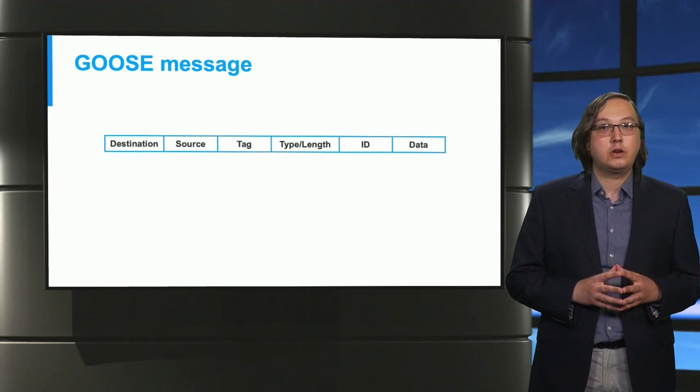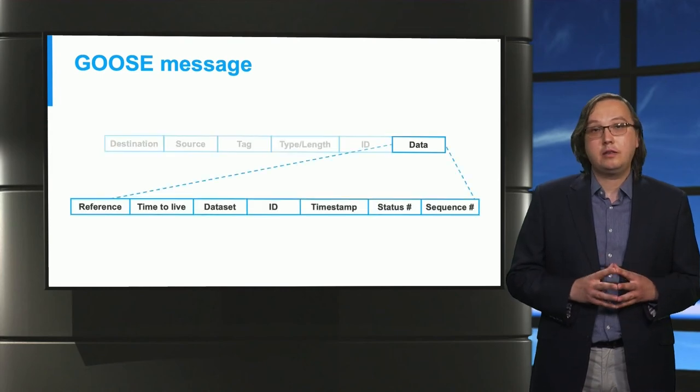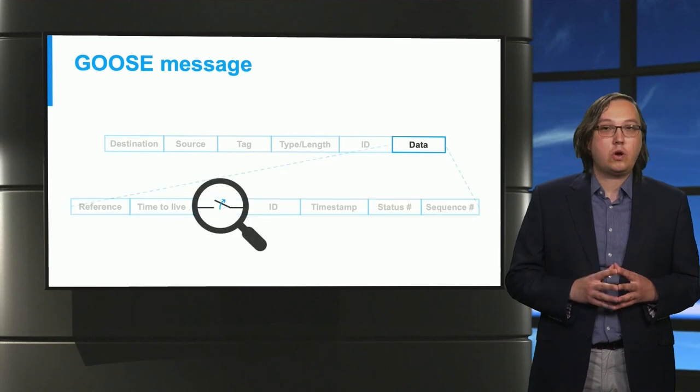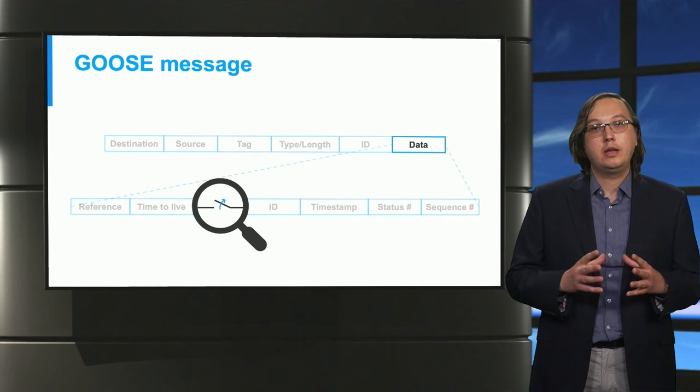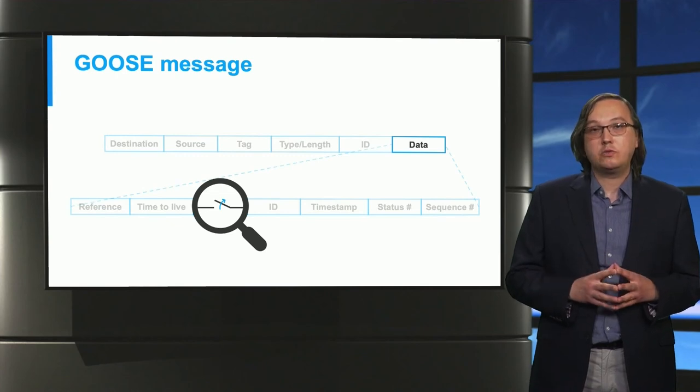Similarly to sample values, a GOOSE message also has a destination and source address, a tag and an ID. Inside the data placeholder there are again various attributes. The GOOSE command indicating what should happen with the circuit breaker is embedded in the datasets. Similar to sample values, there is no security mechanism to safeguard this data.